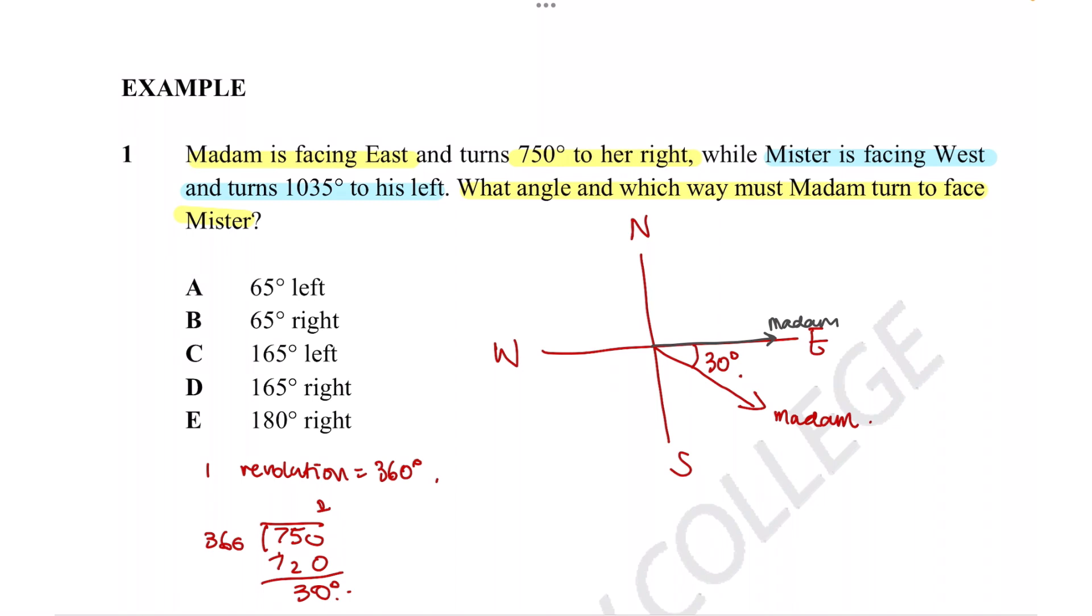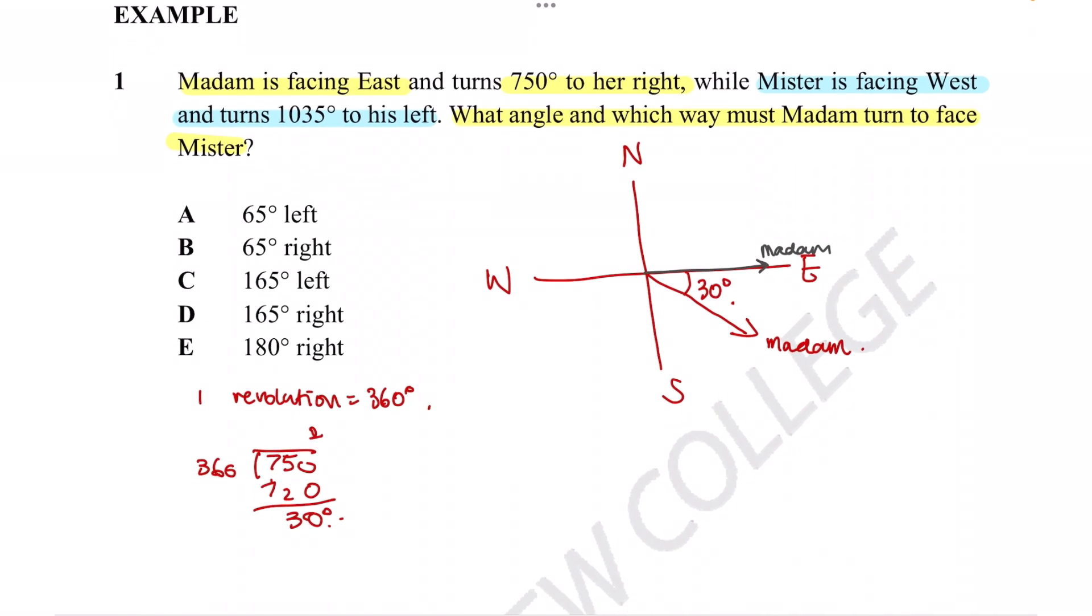Let's apply the same technique to Mister. Mister starts off west and he's turning to his left, so that would be in this direction. We need to figure out how much he actually turns after all of his revolutions. So let's see, 1035 divided by 360.